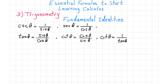Then we have one of the most important identities in trigonometry, which is sine squared of theta plus cosine squared of theta equals 1. Please remember this one — it is one of the most important identities in trigonometry.